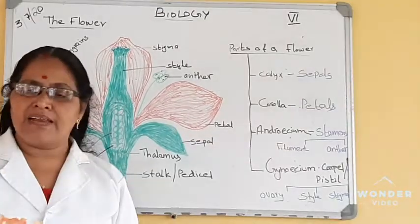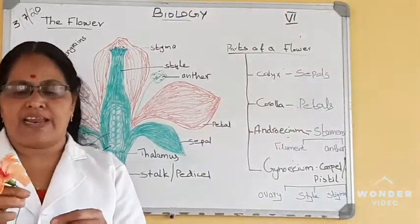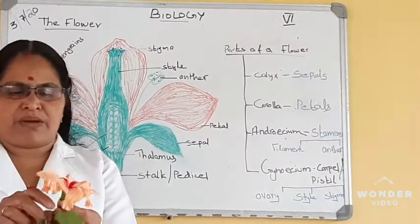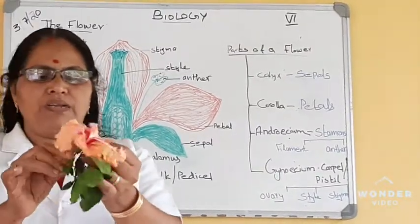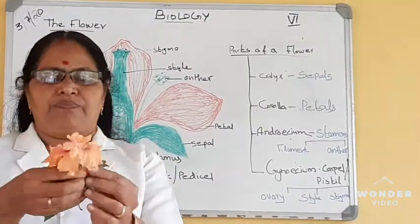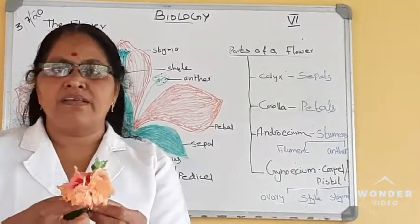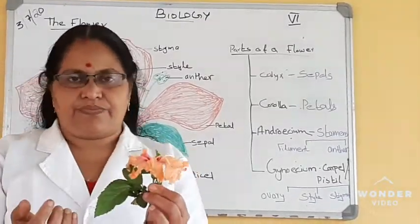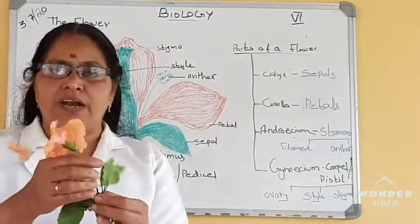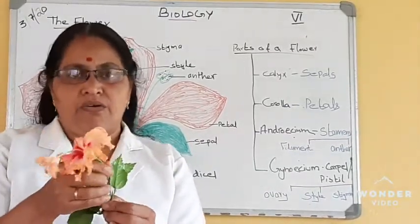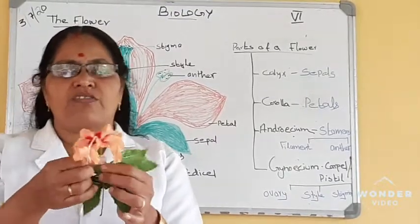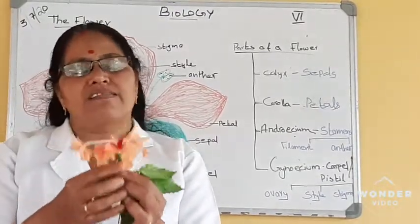In some plants there will not be a pedicel — they are attached directly on the stem, without the pedicel. Such flowers are called sessile flowers. A flower with a pedicel is called a pedicellate flower, or stalked flower. And a flower without a stalk is called a sessile flower.